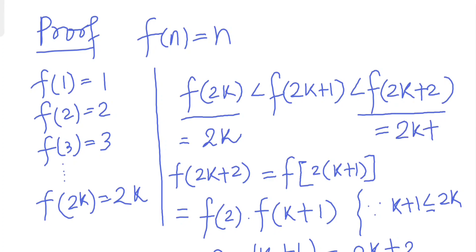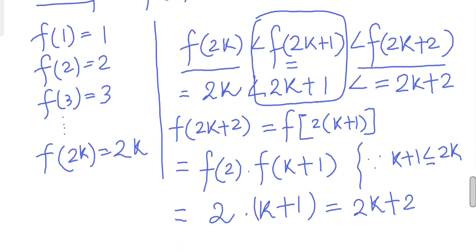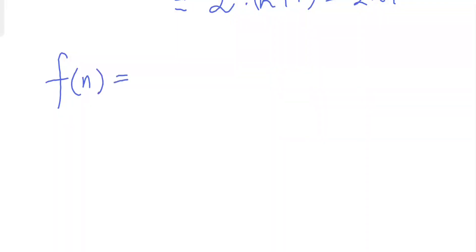Using the third property, since f is strictly increasing over natural numbers, the only value strictly between 2k and 2k+2 is 2k+1. Therefore f(2k+1) = 2k+1. We have now proven it for both even and odd numbers, finishing the proof that f(n) = n for all natural numbers.